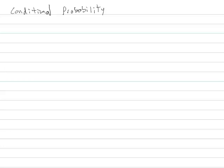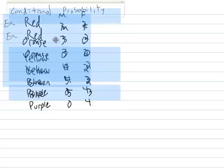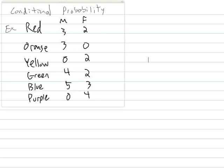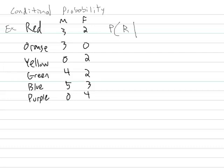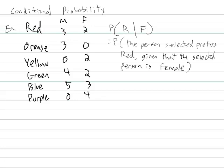Now let's take a look at conditional probability. We'll start with the intuitive approach using an example we've looked at — a survey of people in the room and their favorite colors, broken up by male and female. First, let's find the probability that, if I randomly select a person, I would select somebody who prefers red, given that the person selected was female. This means the probability that the person selected prefers red, given that the selected person is female — that's what the vertical bar notation means in words.